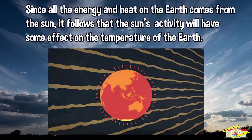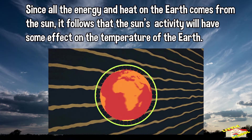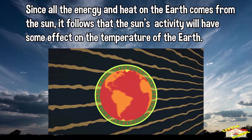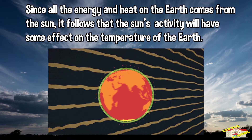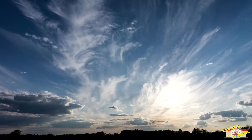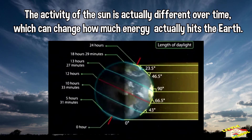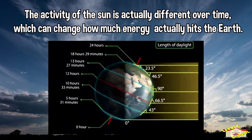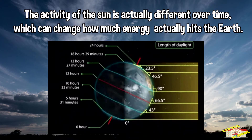Since all the energy and heat on the Earth comes from the sun, it follows that the sun's activity will have some effect on the temperature of the Earth. The activity of the sun is actually different over time, which can change how much energy actually hits the Earth.